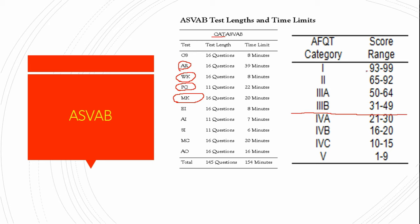These score ranges are percentile ranks. If you score a 50, for example, that means you scored better than 50% of all test takers — it doesn't mean you got 50% of the questions right, just that it's your relative score compared to all test takers. With that said, let's talk about the word knowledge section and how you can increase your performance on it.